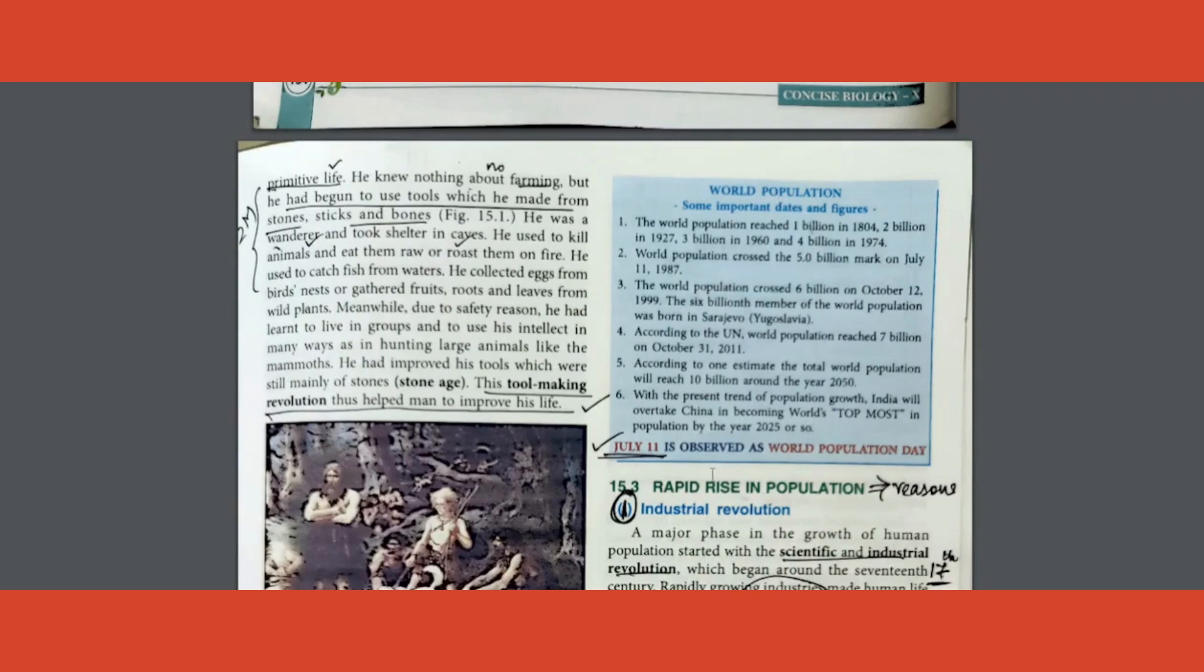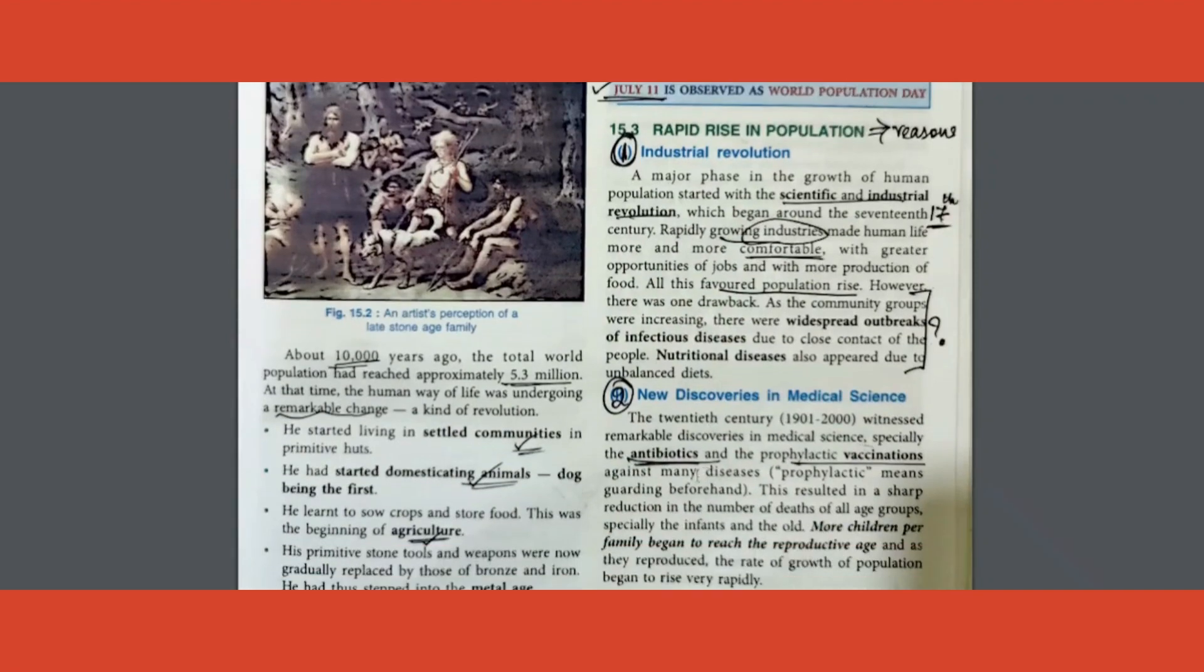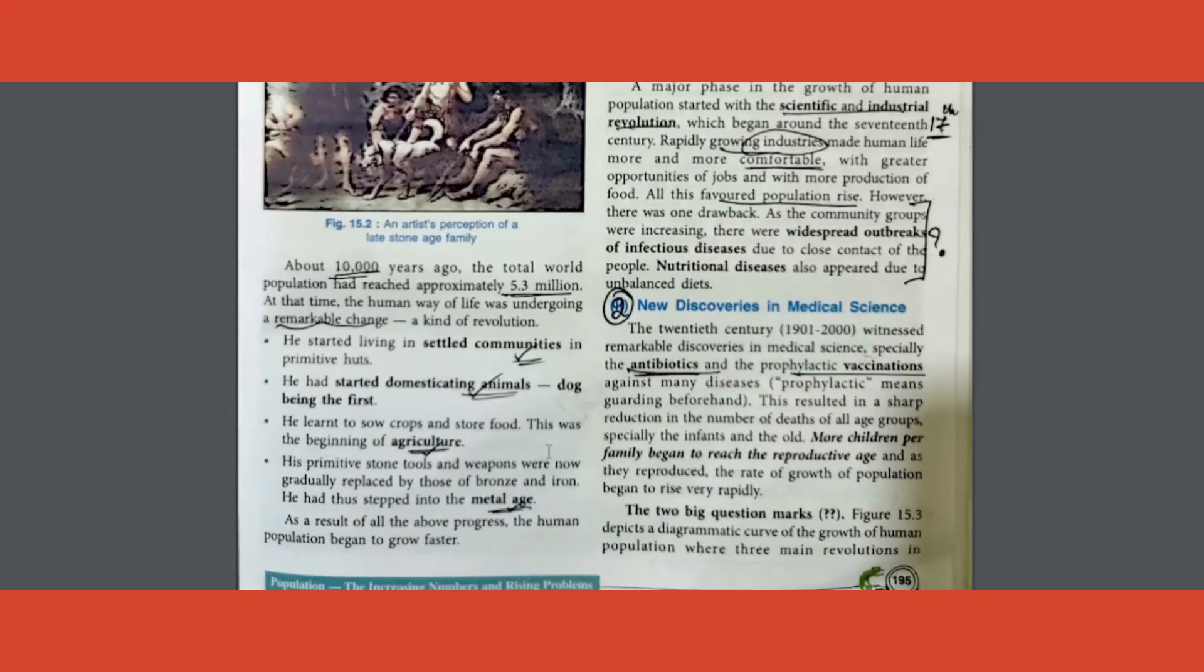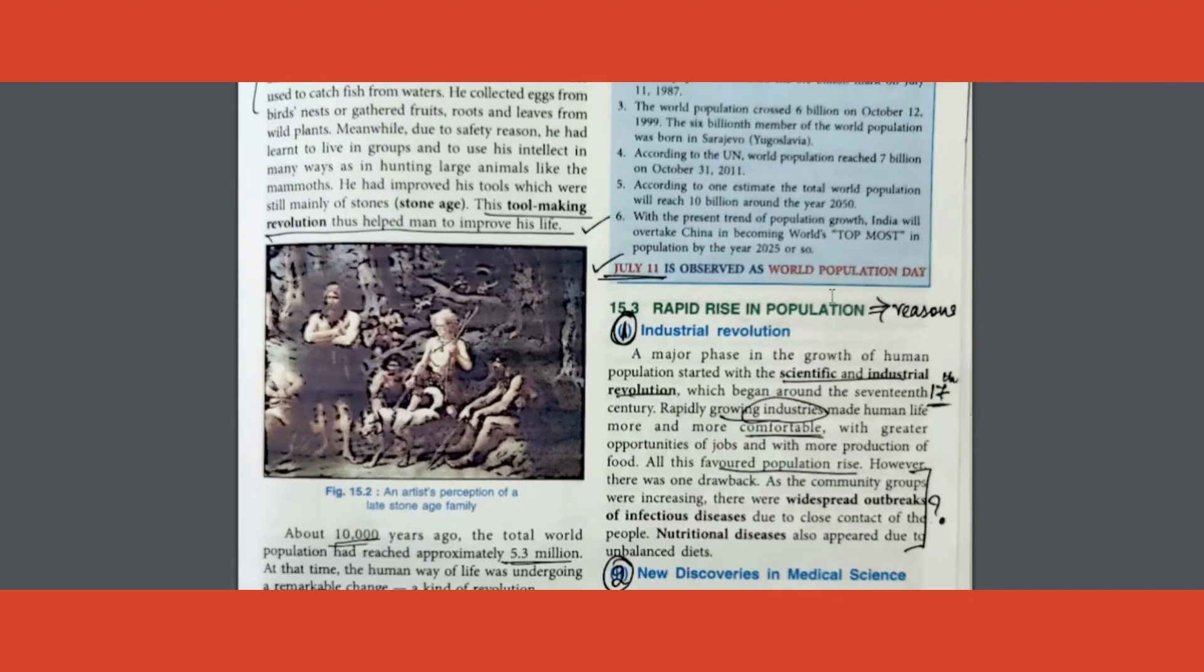World Population Day, one MCQ you can expect, July 11th, please mark that. After that, what are the important things? Reasons for rapid rise in population. Rapid rise in population is called as population explosion. Please write that down somewhere. Population explosion means rapid rise in population.